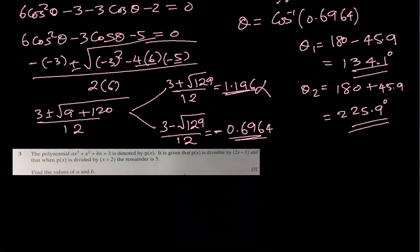We are ready with the next one. The polynomial ax³ plus x² plus bx plus 3 is given. It is divisible by 2x minus 1, that means it's a perfect root. So 2x minus 1 is a factor. Make it equal to 0, it becomes root, so 1 over 2 is the root. And when it is divided by x plus 2, remainder is 5, that means x plus 2 is not a factor.